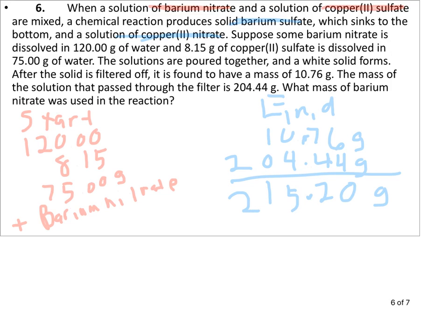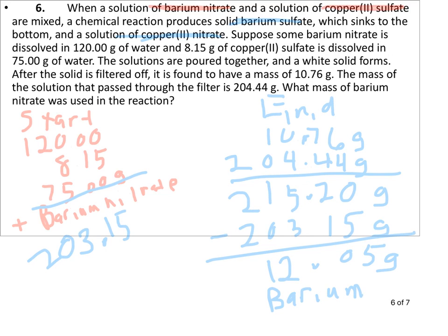215.20 grams. If I come over here, we're going to have to subtract off what we had here. So I'm going to come back over here and we're going to add that up. 8.15 and 203.15, so we subtract the 203.15 grams and we get 12.05 grams of the barium nitrate.